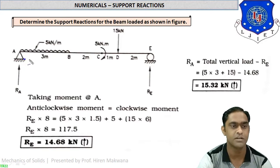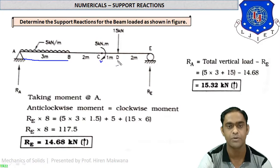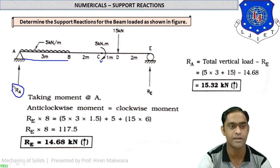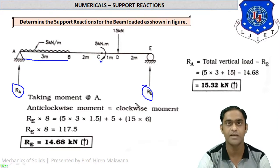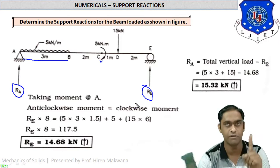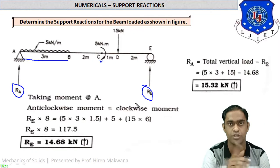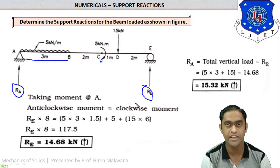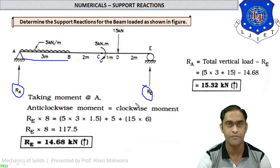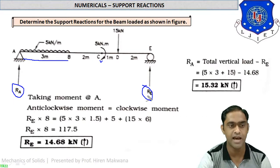The UDL is concentrated over a 3-meter span. The moment is next, followed by the point load at point D. Our target is to find the reaction at support A (RA) and the reaction at support E (RE). Since there is no inclined or horizontal force acting on the beam, only vertical reactions are present.